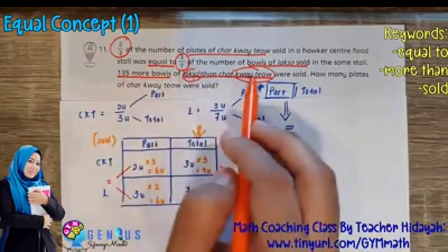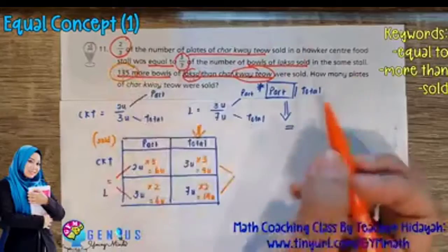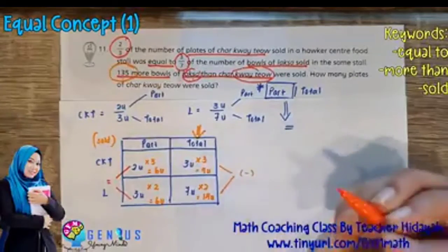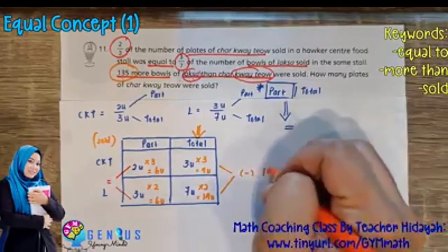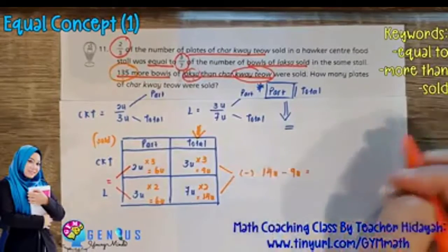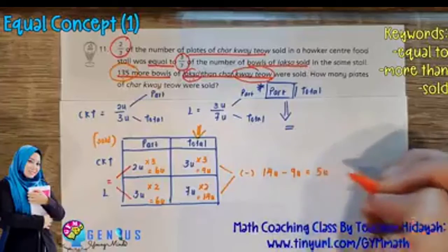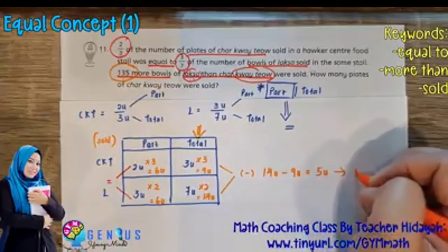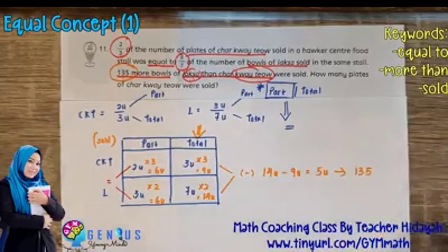If you look at the question, the Laksa is more than the Cha Kuei Tiao. How many more? 135 more. So which means you have to minus them. So we take 14 units minus 9 units equals to 5 units. And this 5 units is actually 135.